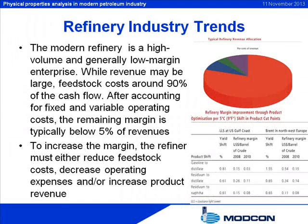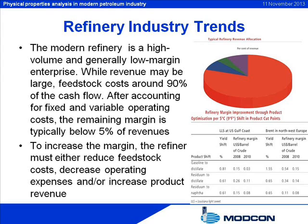The modern refinery is a high-volume and generally low-margin enterprise, with feedstock costs around 90% of the cash flow. After accounting for fixed and variable operating costs, the remaining margin is typically below 5% of revenues. To increase this margin, refineries must either reduce feedstock costs, decrease operating expenses, and/or increase product revenue. Small improvements in yield and costs drop straight through the bottom line and can make a huge difference to profit and cash flow.